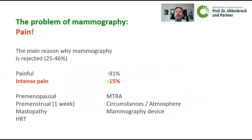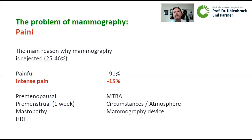But this runs into the main problem of mammography, which is pain. Pain is the main reason why mammography is rejected. This occurs in between 25 and 46 percent of examined women. At least 91 percent of examined women said that mammography was painful, and up to 15 percent reported intensive pain. There are factors we can change and factors we cannot. Factors we cannot change include the premenopausal status, the premenstrual status of the woman at least one week before, mastopathy with dense and mastopathic breast tissue, and current hormone therapy.